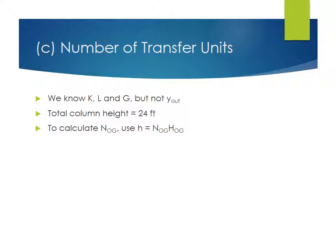For part C, we would like to calculate the number of transfer units. And what we know, we know the values of K, so the Y over X slope, the liquid flow rate, and the gas flow rate, but we don't know the value of Y leaving the column. So we can't apply a formula that just is based on integrating the expression for the number of transfer units. But what we do know is that the total column height is 24 feet. And the relationship that the total height equals the number of transfer units times the height of a transfer unit always applies. So if we know H is 24 feet, and we know the height of a transfer unit is 4 feet, it's straightforward to calculate the number of transfer units.